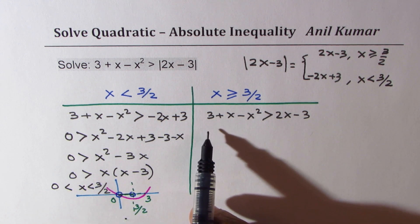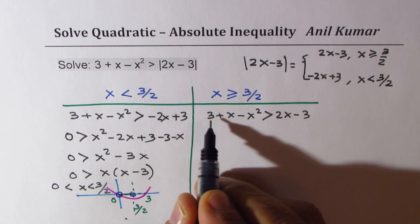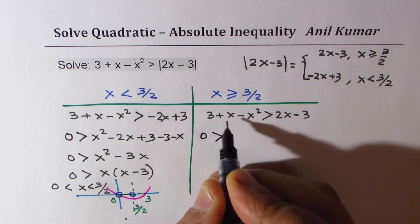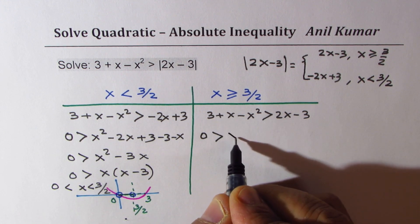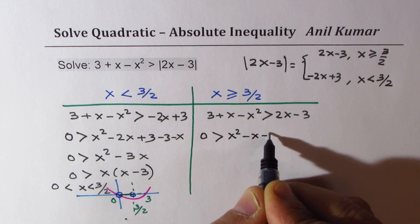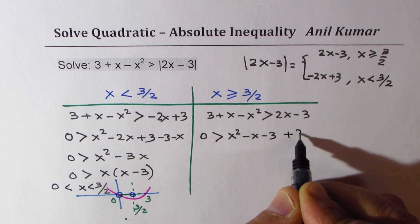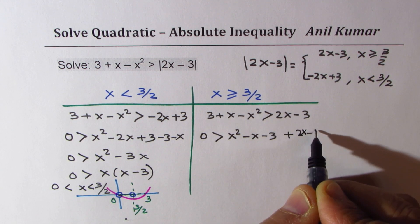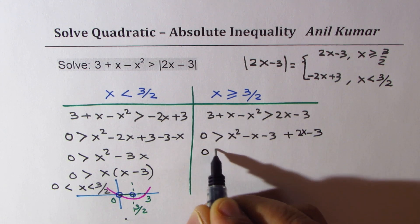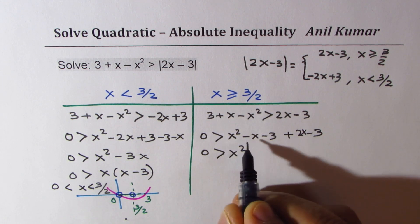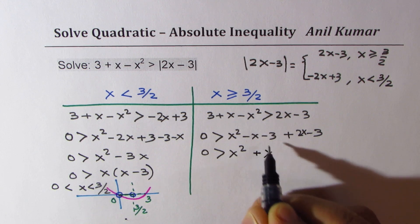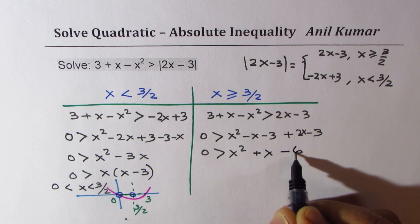Now let's solve the right-hand side. So again, we will take them on the right side. So we get 0 is greater than x squared minus x minus 3. We already have 2x minus 3 here. Combining the terms, we get x squared plus x minus 6.